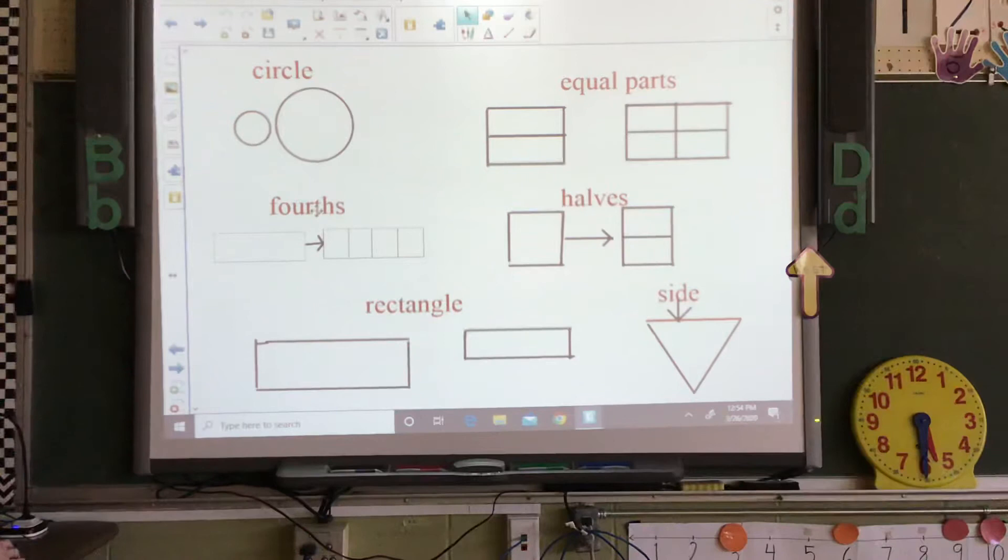Let's go down to this one and it's fourths. It says four equal parts of a whole. Each part is a quarter or fourth of the whole. So there's this shape and here it is divided into four equal parts. So if I colored one part of that, it would be one fourth.